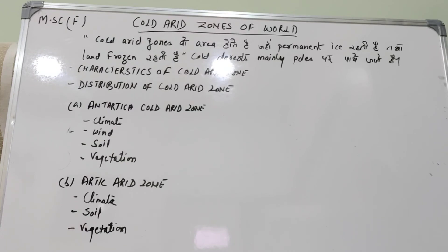Invertebrate fauna में phytoplankton में diatoms, ice algae में diatoms, chrysophycean algae, dinoflagellates और green flagellates, zooplankton, shrimps पाए जाते हैं। यह सब Antarctic cold arid zone का description है।